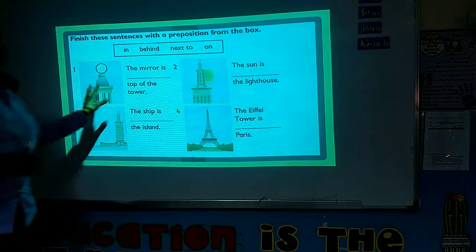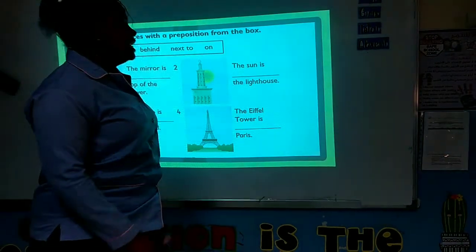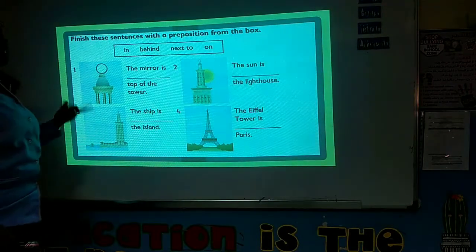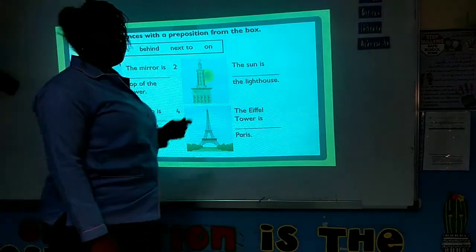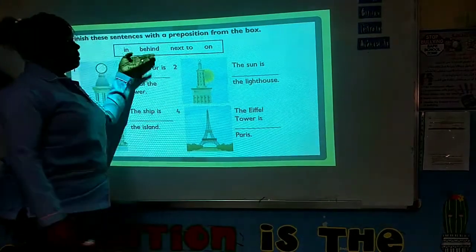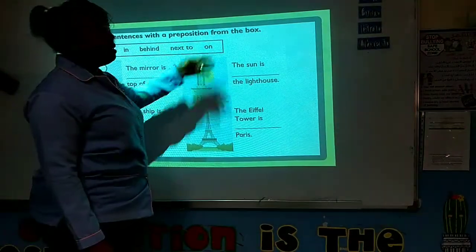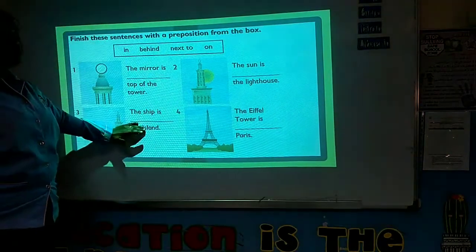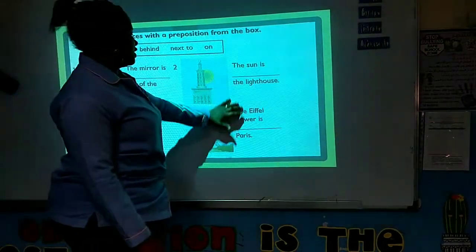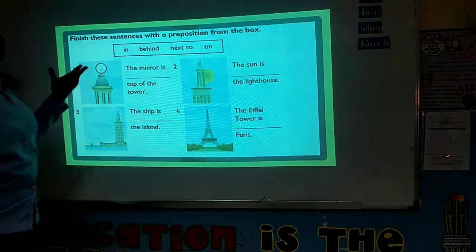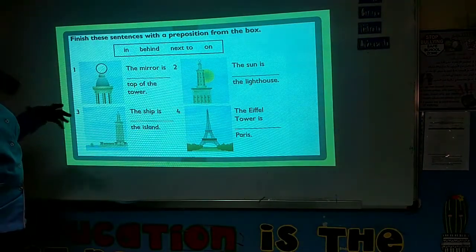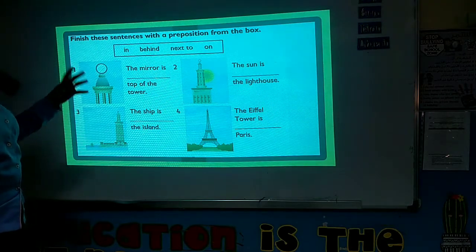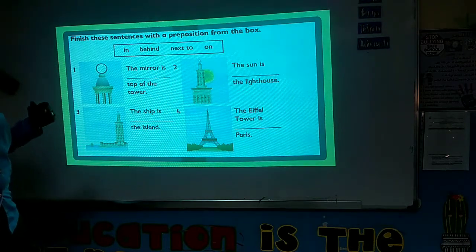So we move to the next slide. Here, we are going to do this activity. It is in our language book. We are going to finish these sentences with a preposition from the box. Here we have behind, next to, on. Now we are going to look at this. I will just do these two for us, and then you will do the rest. We are going to look at it very well so we will be able to tell where each of the items mentioned can be found.